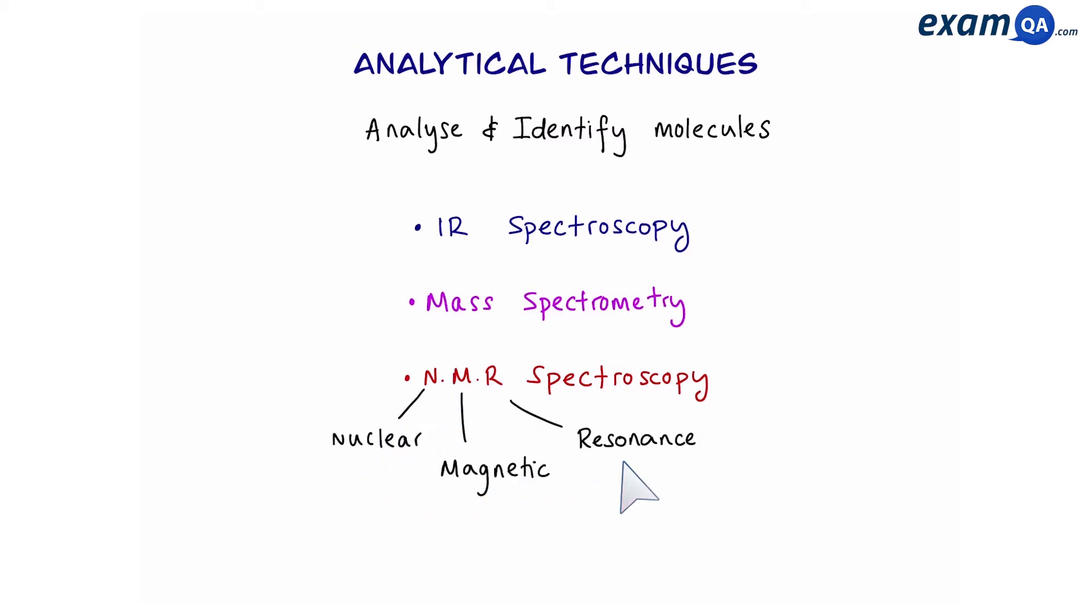Before we look at that, let's quickly remind ourselves of the benefits of IR and mass spec. IR spec can help us identify different functional groups, and mass spec can tell us the molecular mass of a molecule.